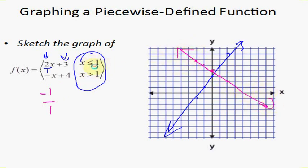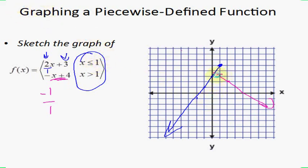The domain tells us what to erase. For the first blue line, x had to be less than or equal to 1, so we erase anything bigger than 1. For the other function, x is greater than 1, so we erase anything less than 1. The only thing to watch out for is whether the endpoints are included or not. For the blue function, x ≤ 1, so x = 1 is included — closed dot. For the other function, x > 1, so it's not included — open dot. That's our piecewise graph.